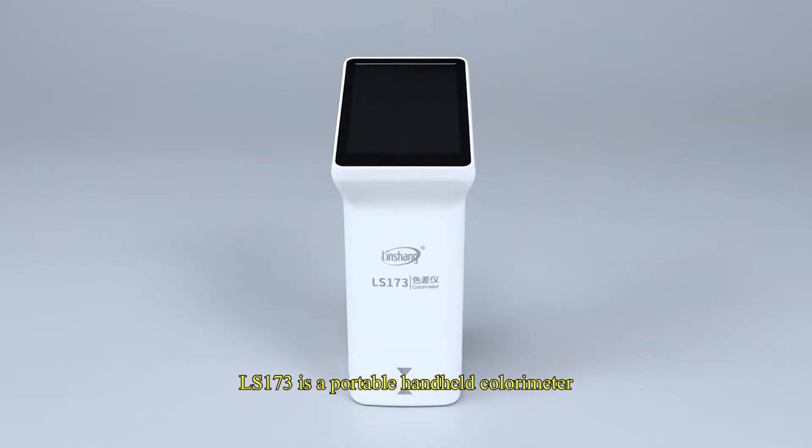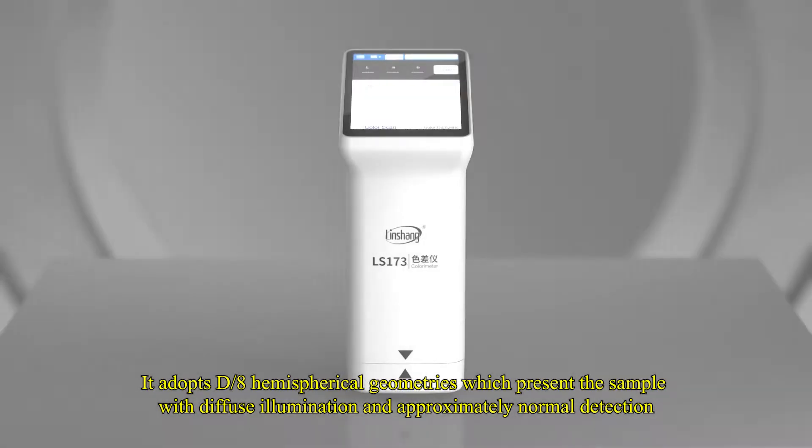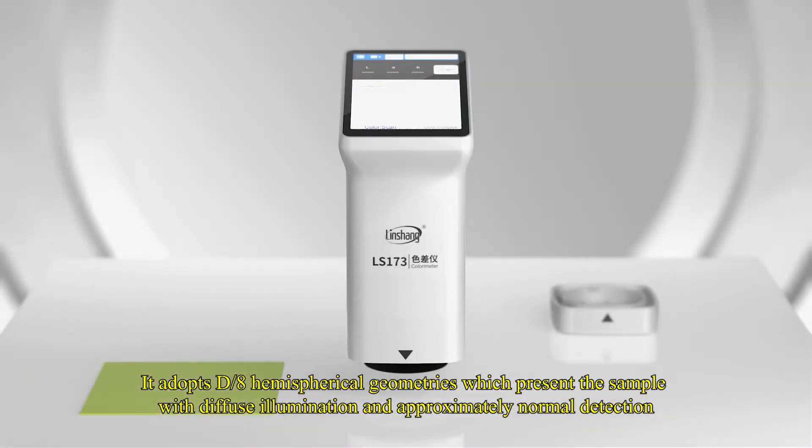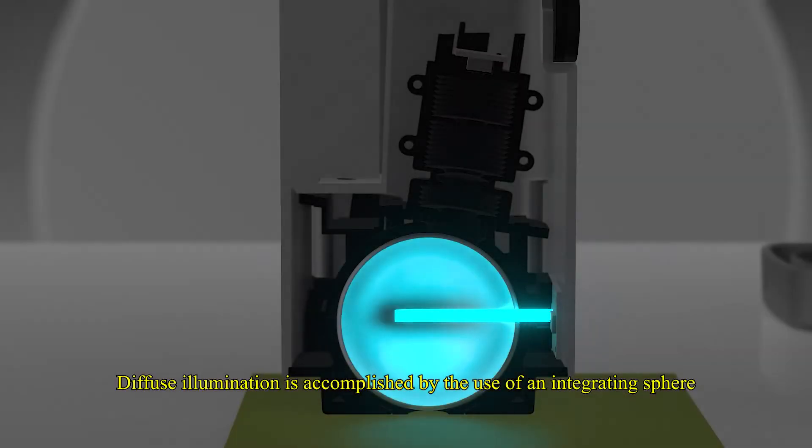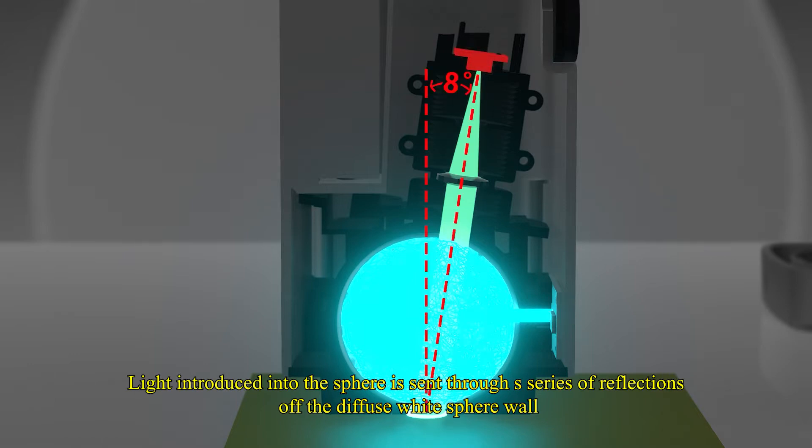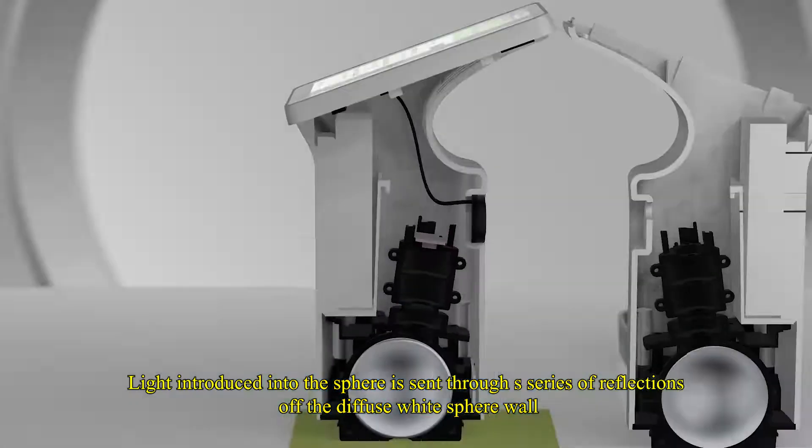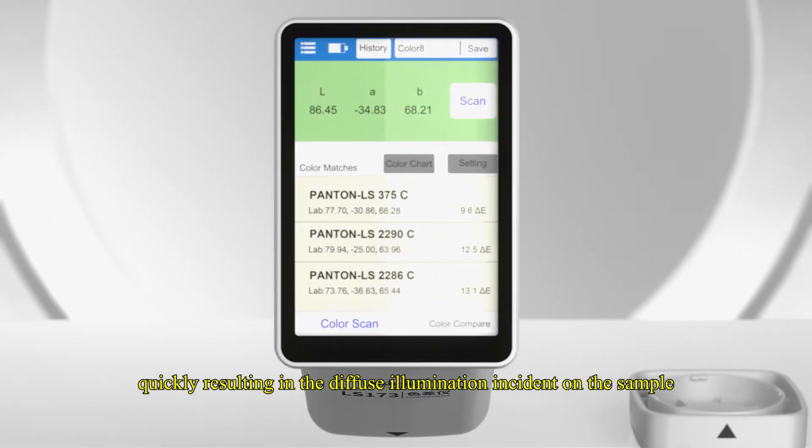LS-173 is a portable handheld colorimeter. It adopts D8 hemispherical geometries which present a sample with diffuse illumination and approximately normal detection. Diffuse illumination is accomplished by the use of an integrating sphere. Light introduced into the sphere is sent through a series of reflections off the diffuse white sphere wall, quickly resulting in diffuse illumination incident on the sample.